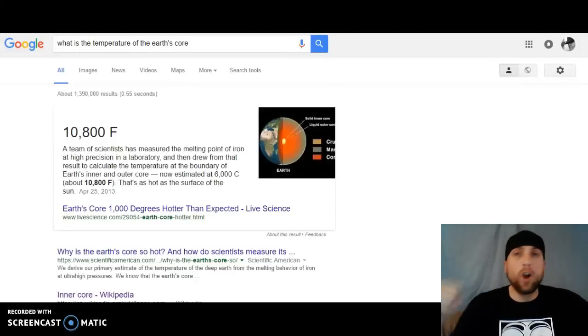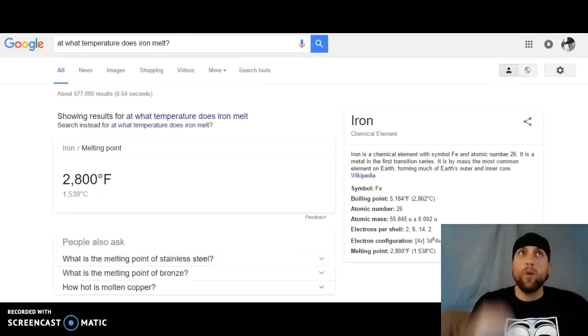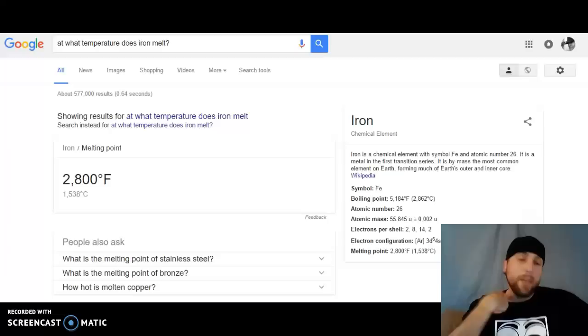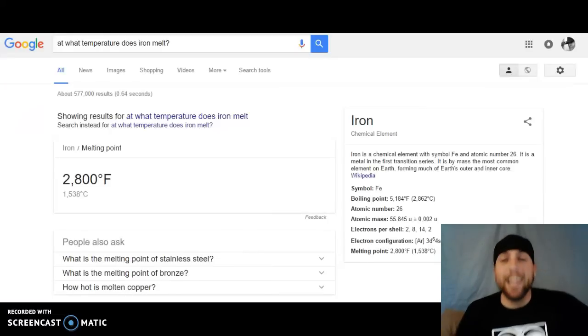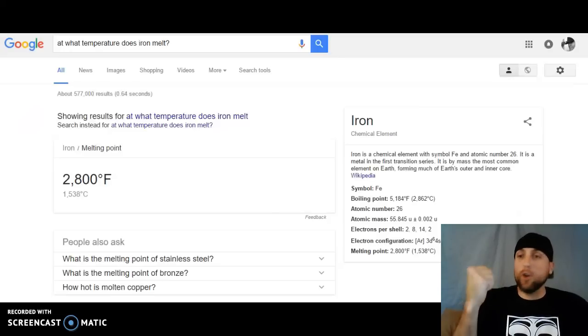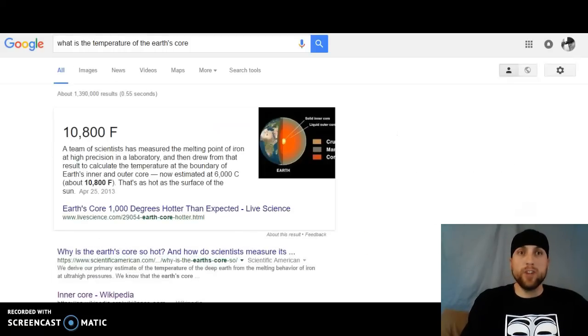All right, so I wondered at what temperature does iron melt? It melts at 2,800. So at around a third of that, iron melts. So the core should have been melted at a way way cooler temperature.